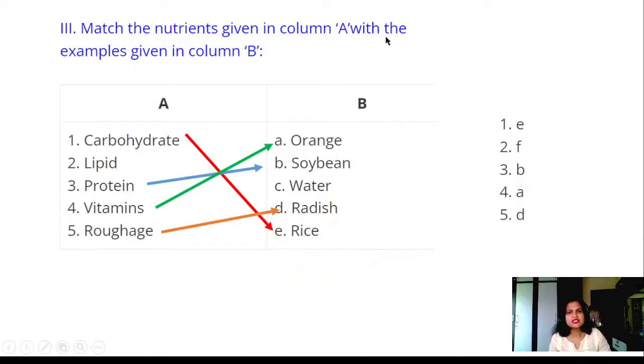Match the nutrients given in column A with examples given in B. Carbohydrates: rice. Lipid is not there in this. Protein: soya bean. Vitamin: orange. Roughage: radish. Lipid example is missing. Water is not a lipid, it is not matching, leave it.